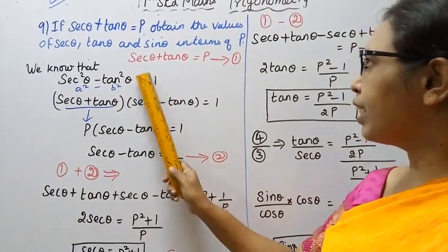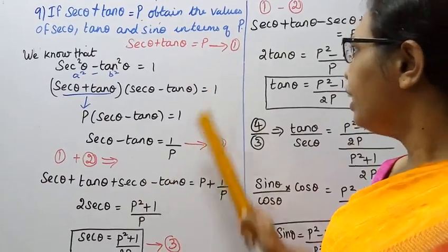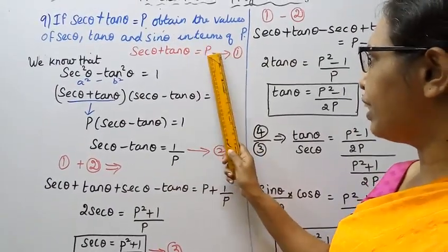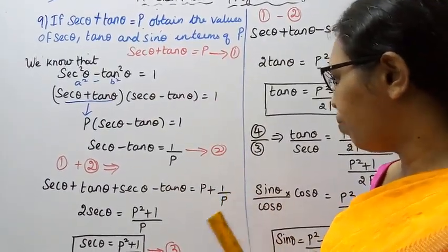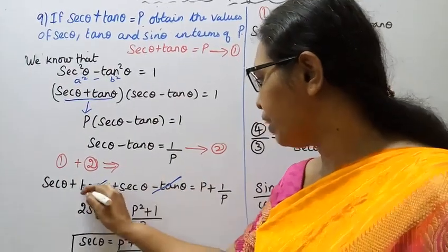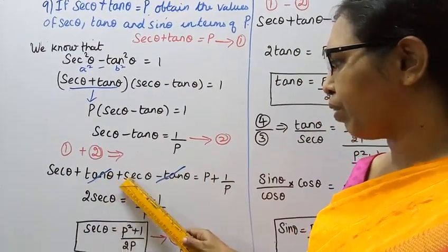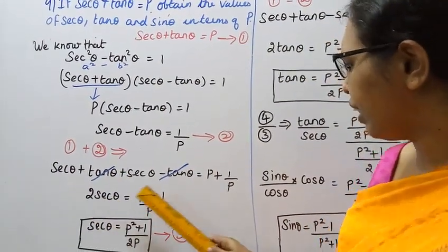Now, sec θ plus tan θ plus sec θ minus tan θ. When we add these, sec θ plus tan θ minus tan θ cancel, giving sec θ plus sec θ, which is 2 sec θ equals...